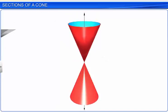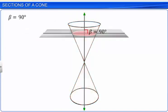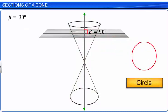If the plane intersects one nappe of the cone at right angle to the vertical axis, the resulting conic section is a circle.